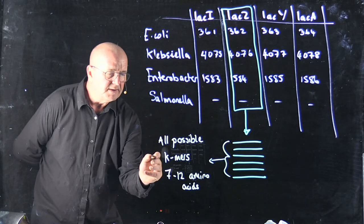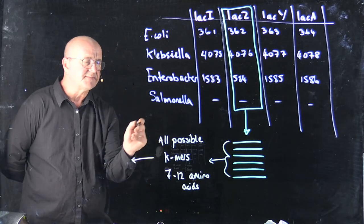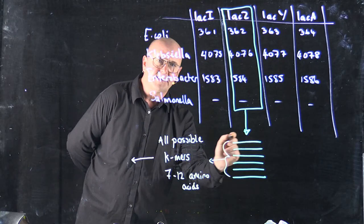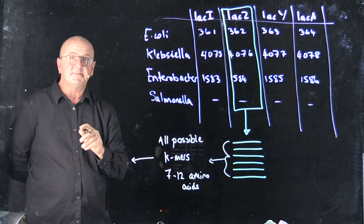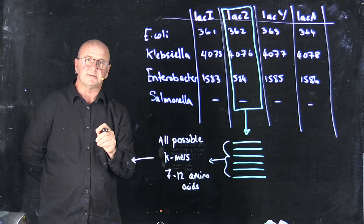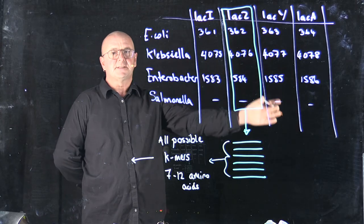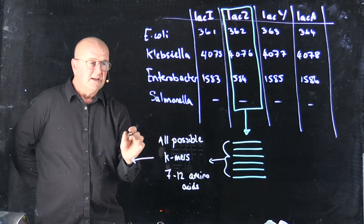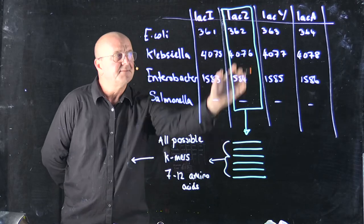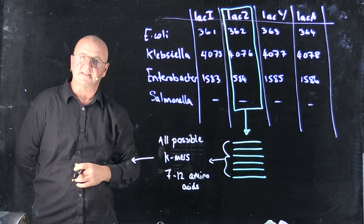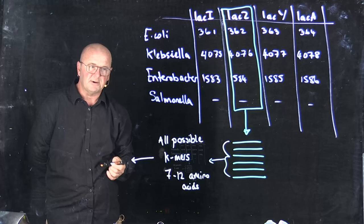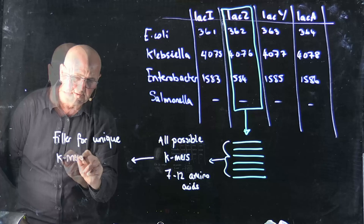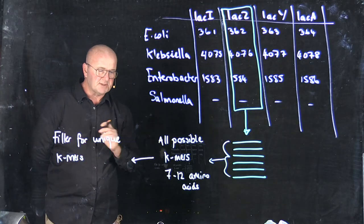Once we've extracted these, we filter them to identify only the K-mers that are present in our family that we're interested in, and K-mers that we never find anywhere else. In our database, we may have 100,000 genomes, and so we can easily say, tell me all the K-mers that are unique, for example, to beta-galactosidase, that we never find anywhere else. So we're going to filter these for unique K-mers.